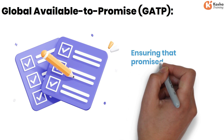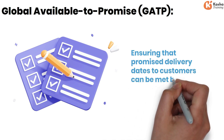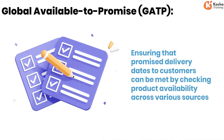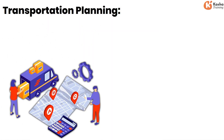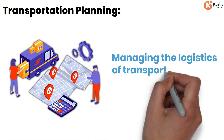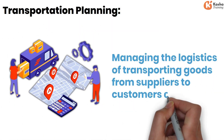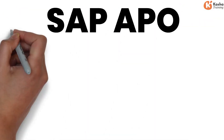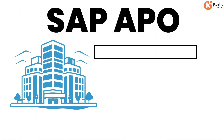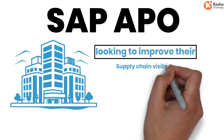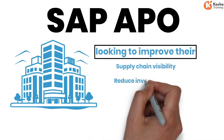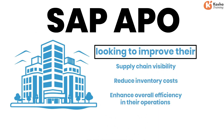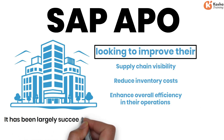Global Available to Promise (GTP) ensures that promised delivery dates to customers can be met by checking product availability across various sources. Transportation planning manages the logistics of transporting goods from suppliers to customers efficiently. SAP APO is especially useful for organizations looking to improve their supply chain visibility, reduce inventory costs, and enhance overall efficiency.